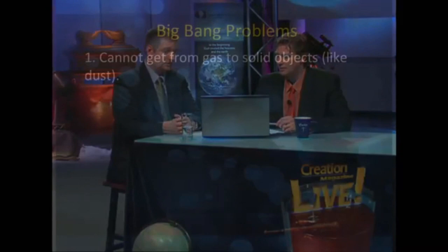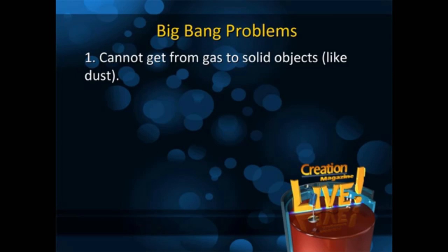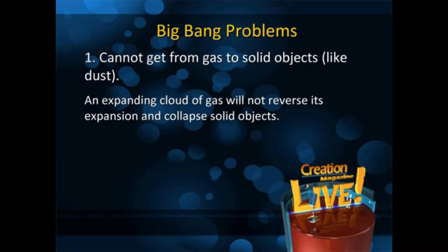If we were to run through it, there are some problems with the Big Bang. One of the first problems is you can't get from gas to solid objects like dust. The Big Bang starts and you have initially a whole bunch of energy, then some hydrogen, perhaps some helium as well. An expanding cloud of gas will not reverse its expansion and collapse into solid objects. How do you get grains of sand from gas not inside a container?